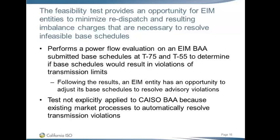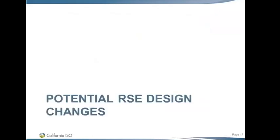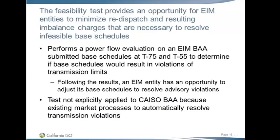The final test is the feasibility test, which is EIM-centric. A power flow is performed on submitted base schedules at T75 and T55 to determine if schedules would result in violations of transmission limits. Results are posted and the EIM entity has a curing period to adjust base schedules to resolve advisory violations. This test isn't explicitly applied to the CAISO BAA but is implicitly implied, as the CAISO's market processes are designed to automatically resolve transmission violations rather than having a manual curing period.